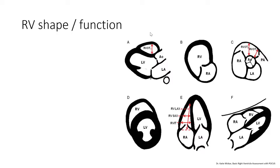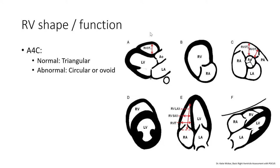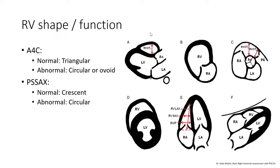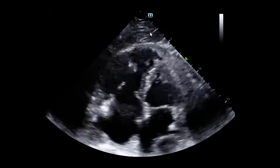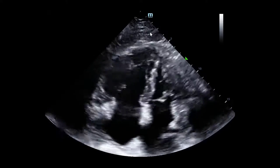RV shape and function is a second facet of assessment. From the apical four-chamber perspective, a normal RV should generally be triangular in shape, while an abnormal RV — as we saw in our case — might look circular or more ovoid. The parasternal short axis should show a generally crescentic RV, whereas an abnormal RV would look more circular. Additionally, the apex of the heart should generally be occupied mostly by the left ventricle, whereas an abnormal apex would have more of the RV taking it over — certainly the case in our apical four-chamber view.